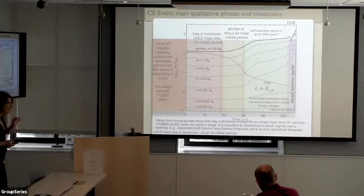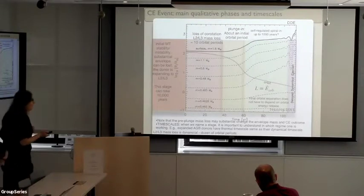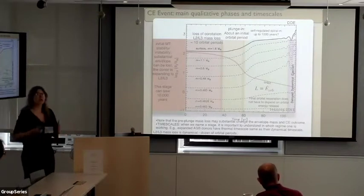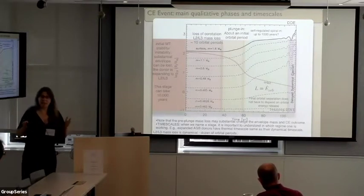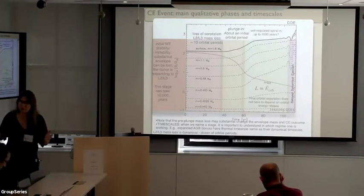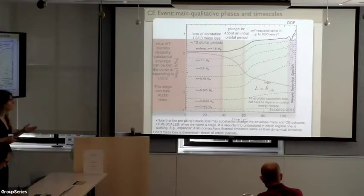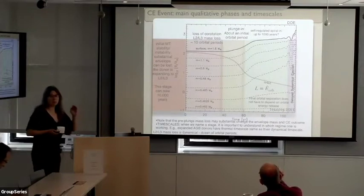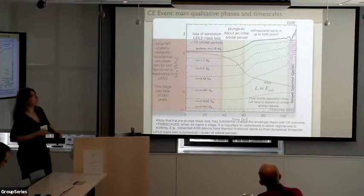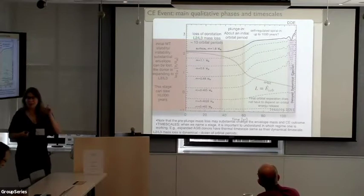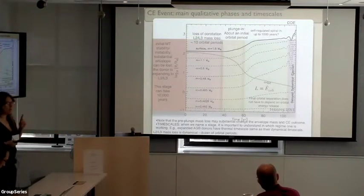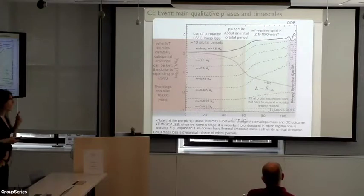Then you have the moment when mass transfer indeed becomes unstable. I call that the moment when you start to lose mass through L2 or L3 points. That stage, at least according to my computation, is not very long — it may take longer in various systems, but it usually takes a dozen, maybe maximum 100 orbital periods. Then you start the spiral-in. During these stages is when most of the initial angular momentum of the binary is lost, which will be important later.